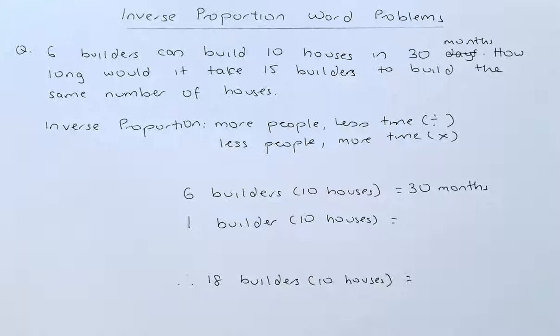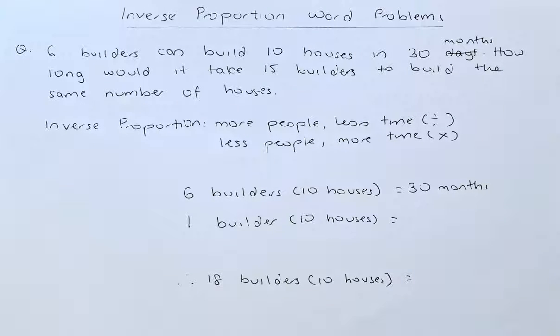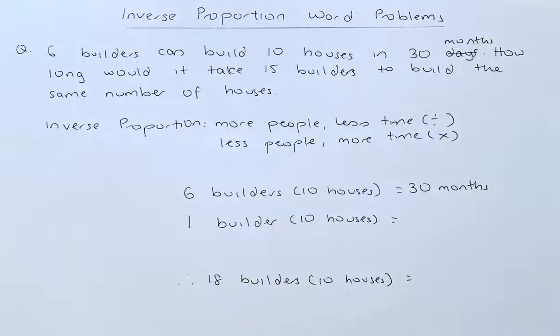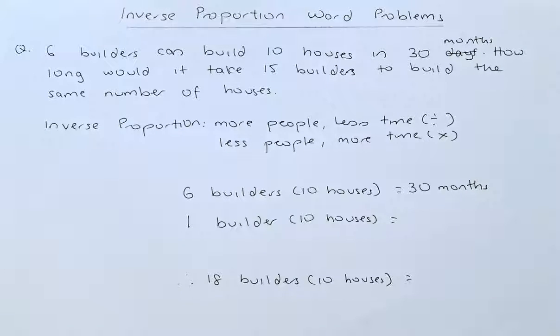So if you have that scenario, you are going to divide. On the other hand, if you have less people, then you are going to take more time. In that case, you are going to multiply. Once you understand that concept, then we can do the inverse proportion.